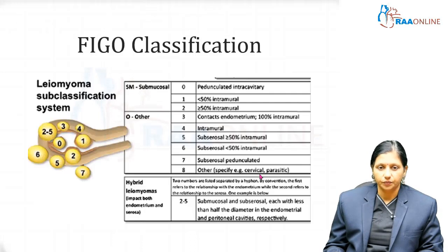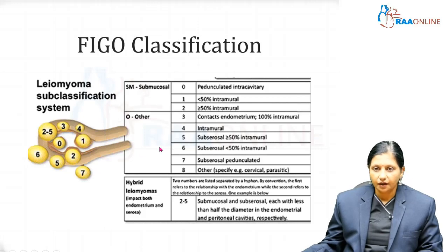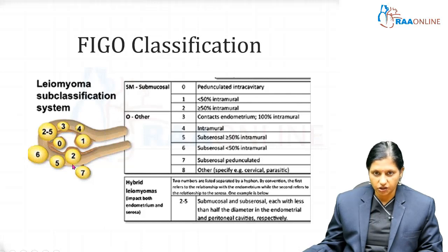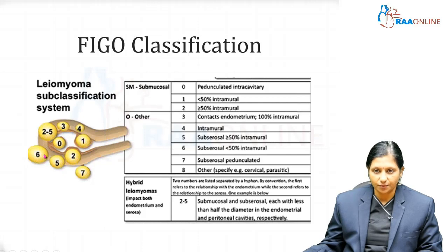The FIGO classification of leiomyoma ranges from zero to eight. Zero to two are submucosal, and three to eight are others. Among submucosal fibroids: type 0 is a pedunculated intracavitary fibroid; type 1 is less than 50% intramural; type 2 is more than 50% intramural; type 3 contacts the endometrium and is 100% intramural; type 4 is an intramural myoma; type 5 is a subserosal myoma which is more than 50% intramural.